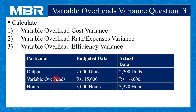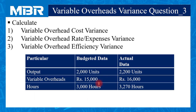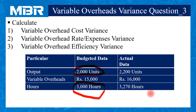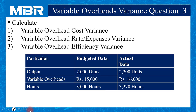Budgeted output is 2,000 units whereas actual output is 2,200 units. Budgeted variable overheads are rupees 15,000 while actual overheads incurred is rupees 16,000. Budgeted hours are 3,000 and actual hours are 3,270. Note that these budgeted hours are given in total format — 3,000 hours for manufacturing 2,000 units — not per unit as in earlier questions. Be careful at the time of analysis.